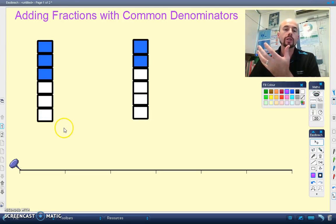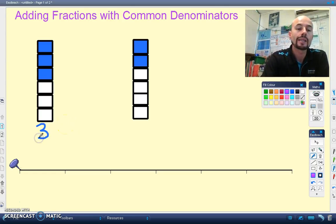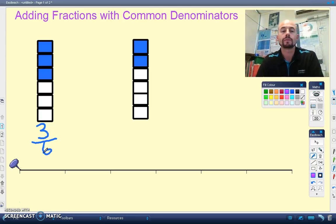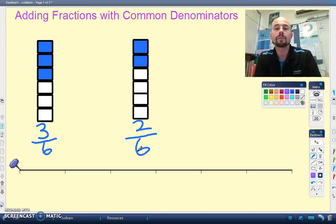In the first fraction we have three shaded out of a total of one, two, three, four, five, six. So we have a fraction of three sixths. Over here we have two shaded out of six. So we have a fraction of two sixths and we want to add them together.